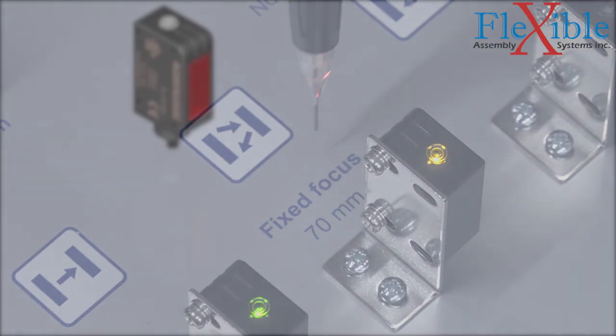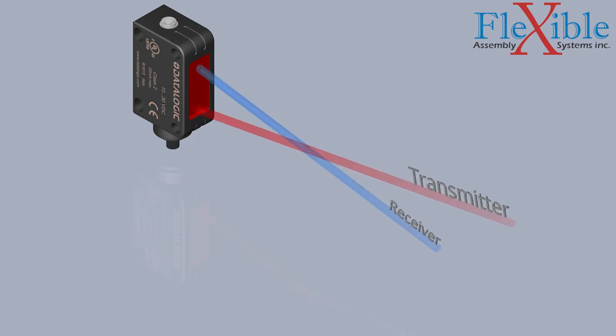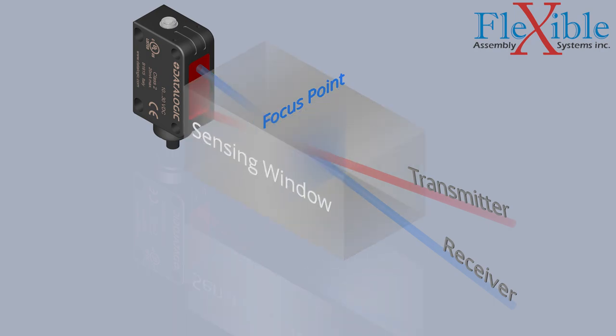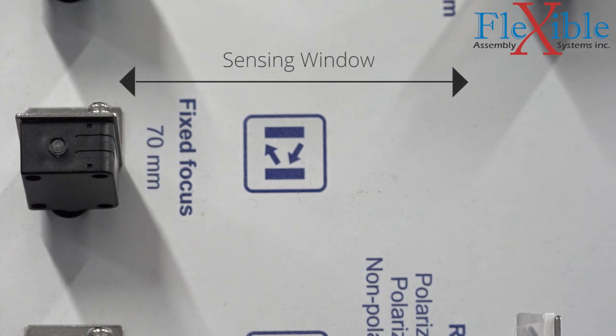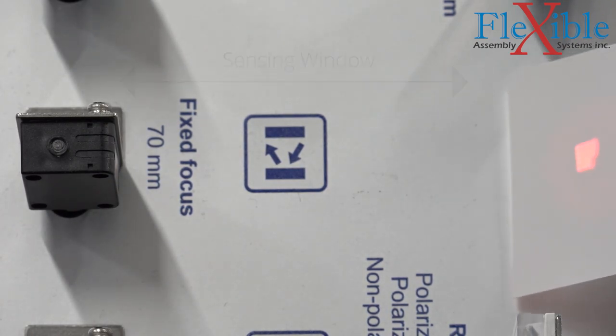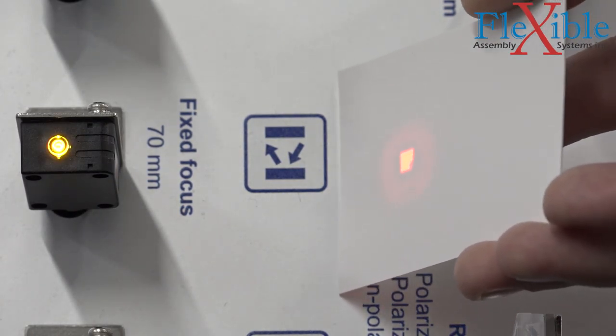In a fixed focus sensor, the transmitter lens and receiver lens are both focused to the same point in space. This point, plus or minus a known distance, is now our sensing window. The sensor will only be able to see targets if they pass through this fixed detection range. Objects outside of it will be ignored.